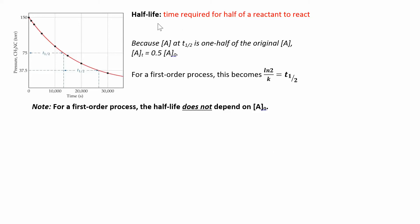We can't really talk about kinetics without considering half-life. Half-life is the time required for half of the reactants to react. You probably learned about this in math, or maybe when we talk about radioactive decay or dating fossils — looking at the half-life of carbon to figure out how long it takes for half of an isotope to decompose, so you can figure out how old things are.